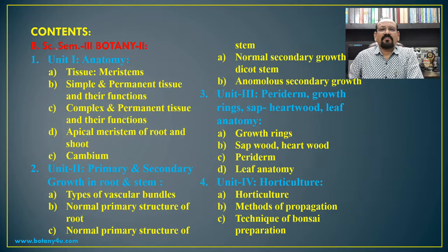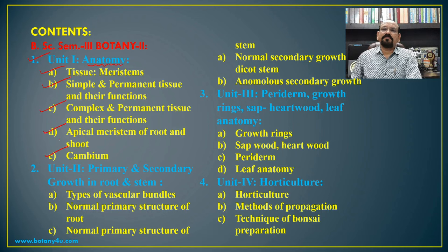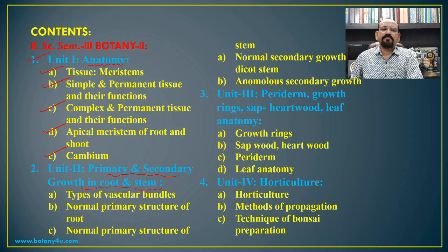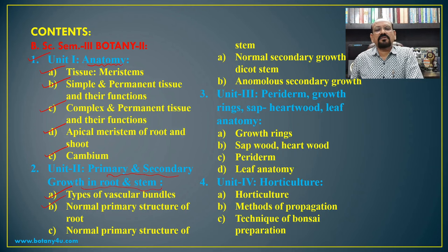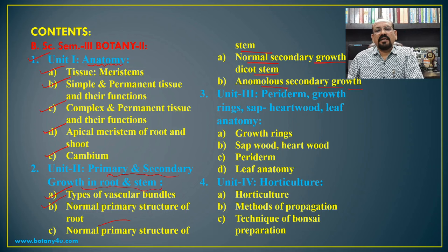The paper has four different units. Unit 1 is based on anatomy, including tissues — meristems, simple and permanent tissues and their functions, complex and permanent tissues and their functions, apical meristems of root and shoot, and cambium. Unit 2 covers anatomy — primary and secondary growth in root and stem, including types of vascular bundles, normal primary structure of root, normal primary structure of stem, normal secondary growth in dicot stem, and anomalous secondary growth in dicot and monocot.